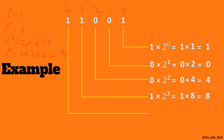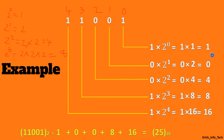Next digit: 1 multiplied by 2 power 4, meaning multiply 2 four times — 2 × 2 × 2 × 2 = 16. So 1 multiplied by 16 equals 16. Now, adding all the results: 1 + 0 + 0 + 8 + 16 = 25. So the binary value 11001 in base 2 equals the decimal value 25 in base 10. This is how you convert a binary number into a decimal number.